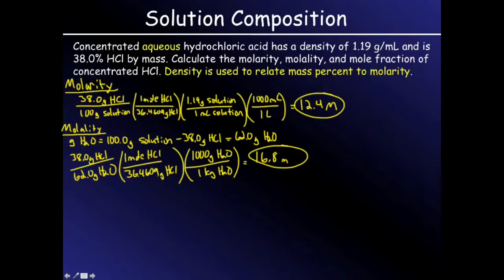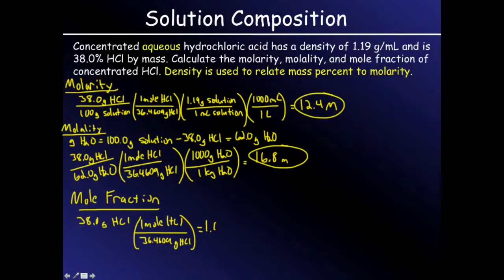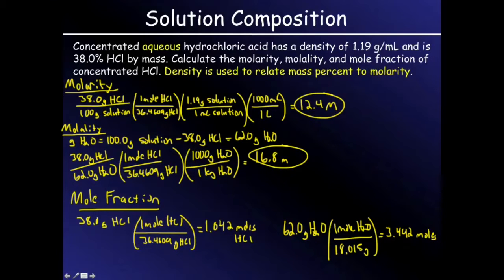Now let's look at mole fraction. If I have 38 grams HCl, I can then calculate my moles. I already determined when I have 38 grams HCl, I have 62 grams water, so I can calculate the moles of water. Mole fraction HCl will then be moles HCl divided by total moles, so I add both of those together in my denominator.